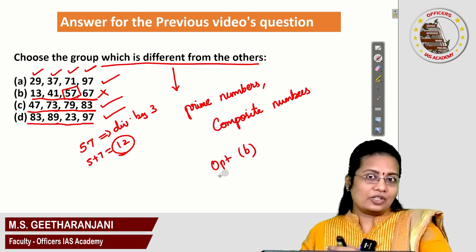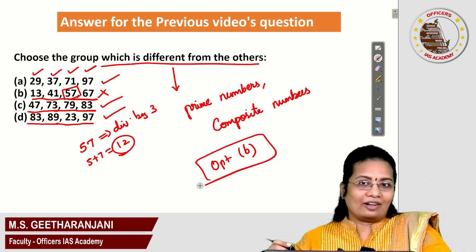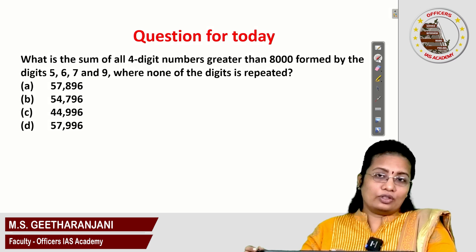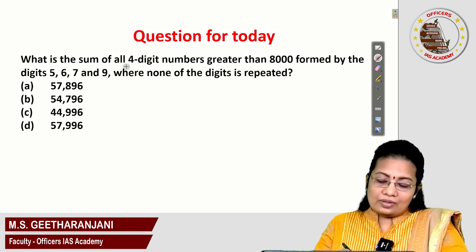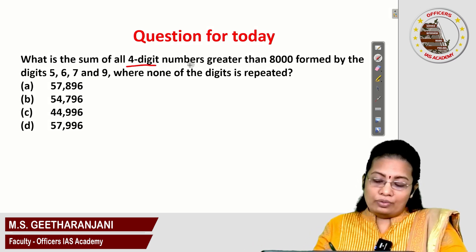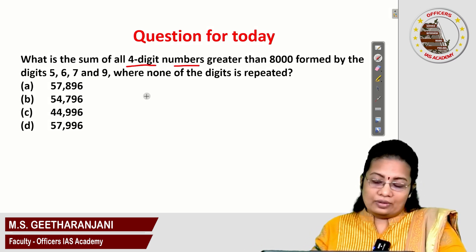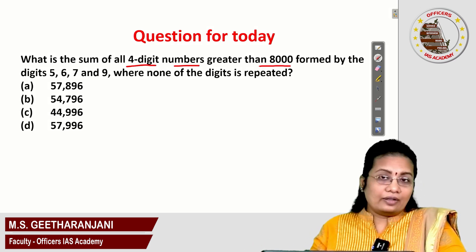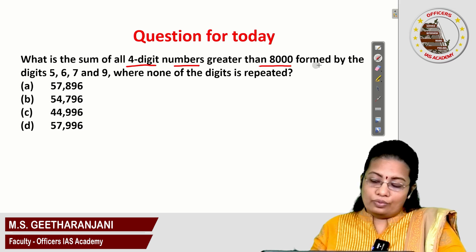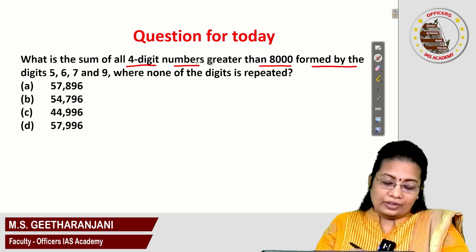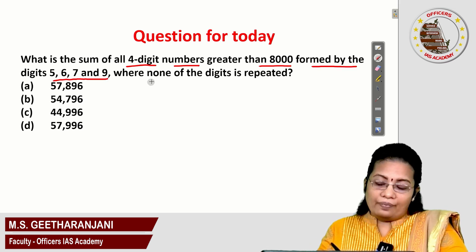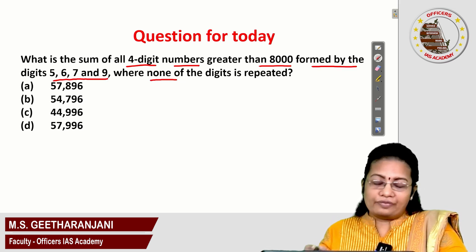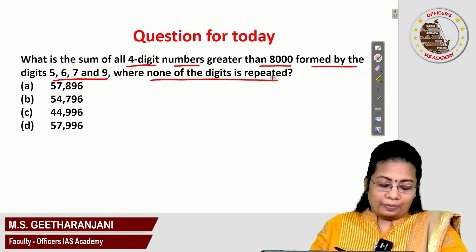Congratulations to those who gave the correct answer! Question for today: What is the sum of all four-digit numbers greater than 8000 formed by the digits 5, 6, 7 and 9 where none of the digits is repeated?